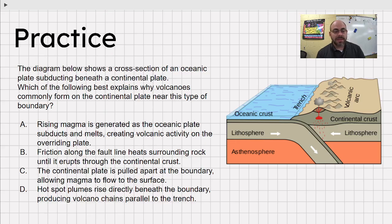Let's look at a practice problem, shall we? Diagram shows cross-section of an oceanic plate subducting underneath the continental plates. This is a continental oceanic convergence area, that's what we're automatically thinking. Which of the following best explains why volcanoes commonly form? We know that volcanoes form because this plate is melting, building up lava, which creates pressure, and eventually has to let go of that pressure. Let's go find that in ABCD. A, rising magma is generated as the oceanic plate subducts and melts, creating volcanic activity on the overriding plate. Hey, we don't even need to read BCD because A is correct.